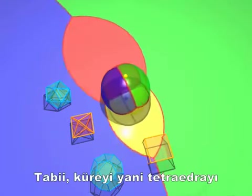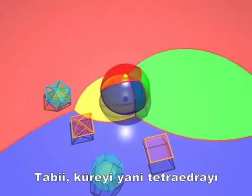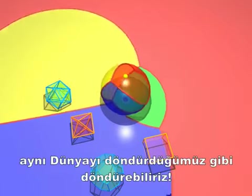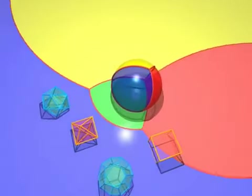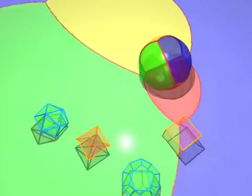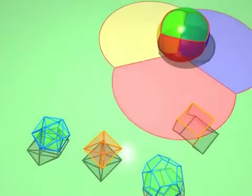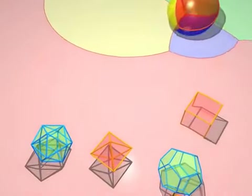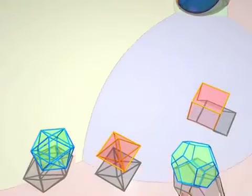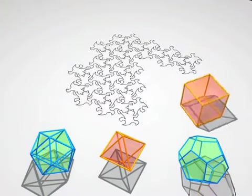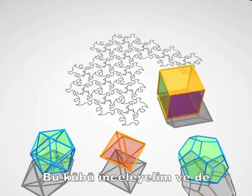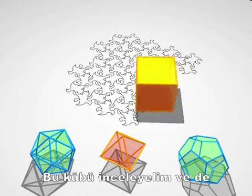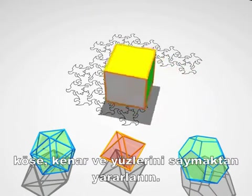Of course, we can spin the sphere around, and with it our tetrahedron, just as we did before with the earth. Let's take a look at the cube and see how many vertices, edges, and faces it has.